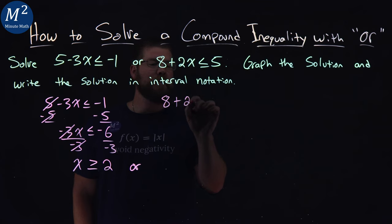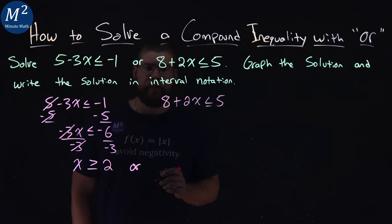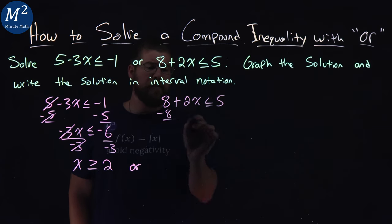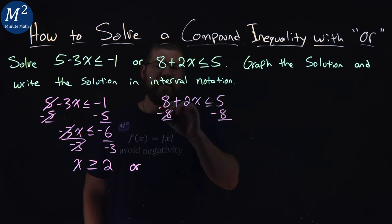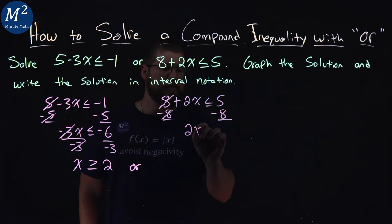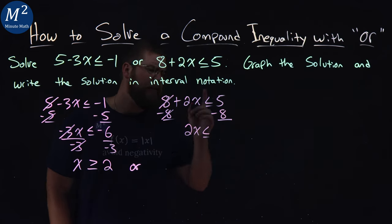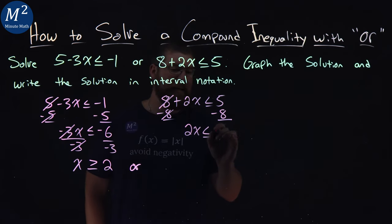8 plus 2x is less than or equal to 5. Well, I have an 8 here, I'm adding it, so the opposite of that is subtracting minus 8 to both sides. 8s cancel on the left, we have 2x is less than or equal to, and 5 minus 8 is negative 3.